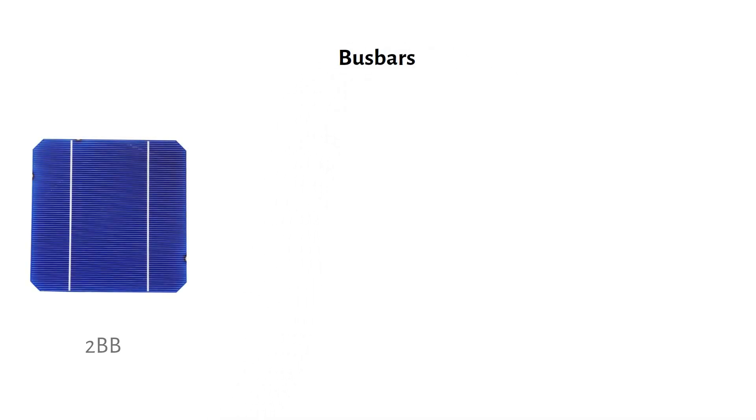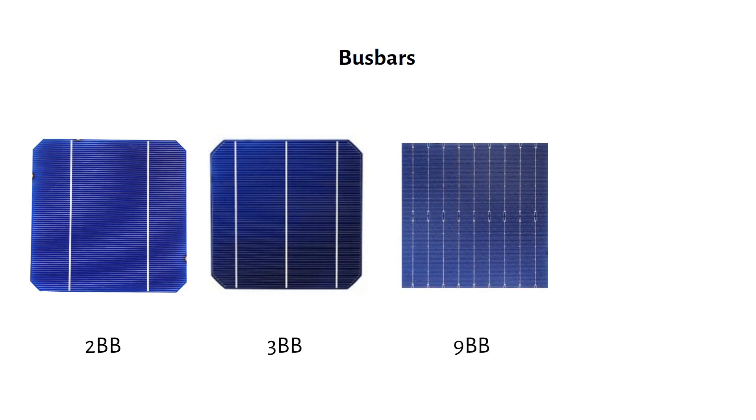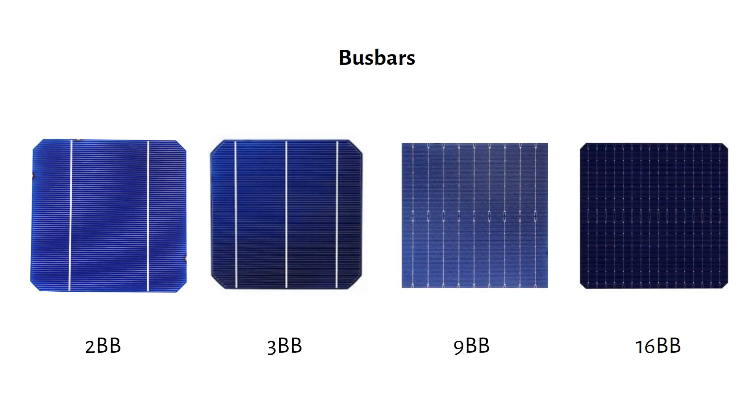Next up, busbars. Older panels had two thick busbars. Newer panels use more, but they are smaller. Now you can see 3BB, 9BB or even 16BB. The number reflects the amount of busbars per cell. More busbars reduce resistance and shading, improving efficiency. It's important to note that the size of the cell stays the same.